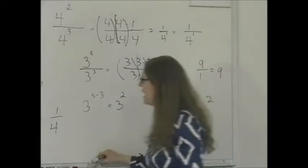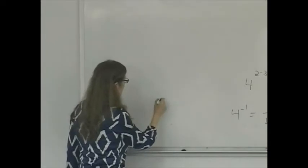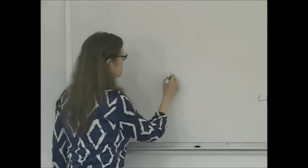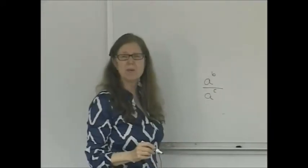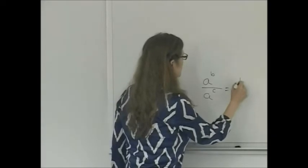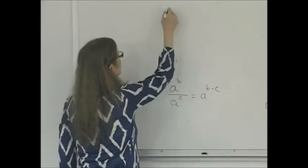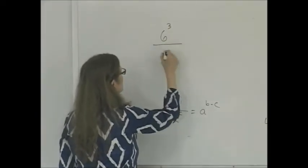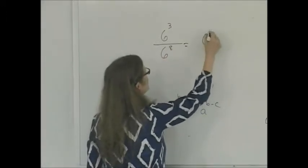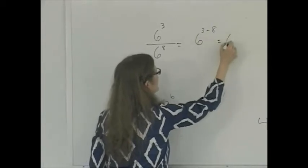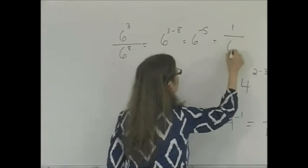So now let's apply that rule to some other numbers. Suppose we had a to the b over a to the c — that's a to the b minus c. Suppose we had 6 to the third divided by 6 to the eighth. That equals 6 to the 3 minus 8, which is 6 to the negative 5, which is 1 over 6 to the fifth power.